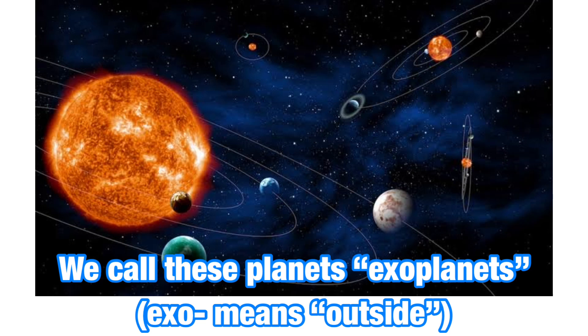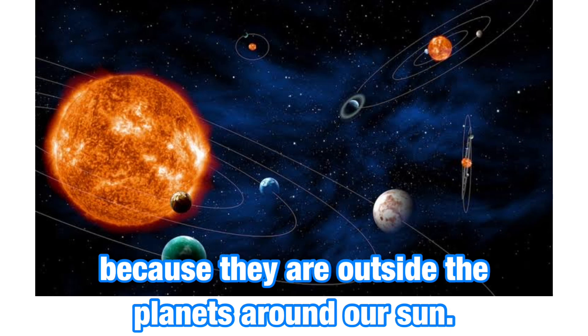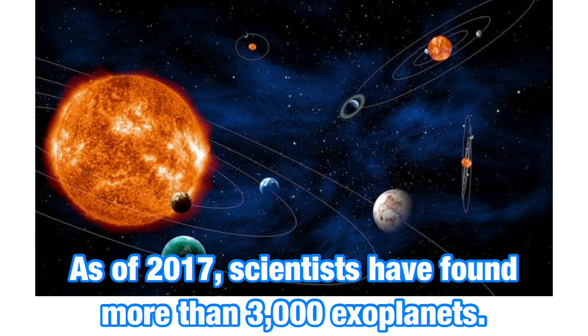Exo means outside, because they are outside the planets around our sun. As of 2017, scientists have found more than 3,000 exoplanets.